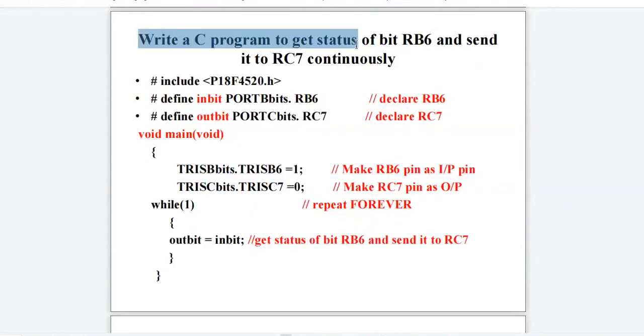Write a C program to get status of bit RB6 and send it to RC7 continuously. Here again, we have defined two macros: inbit for the RB6 pin, and outbit for the RC7 pin. We have configured RB6 pin as input pin and RC7 pin as output pin.